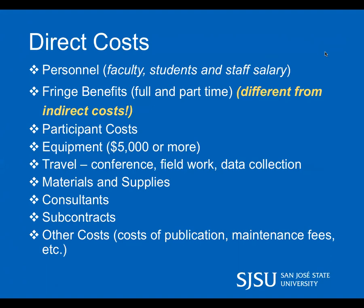Other direct cost categories include consultants, subcontracts, and other costs like publications and marketing. Participant costs vary by project type — for example, if you have students or teachers participating in a survey or study, or if you're providing a training stipend for a one-time participation event. Those people are not employees; they're just doing a one-time activity. That falls under participant costs.